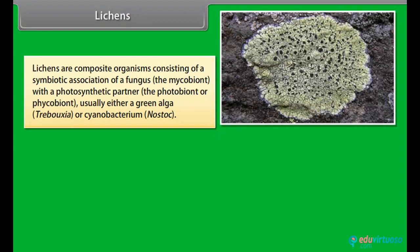Lichens are composite organisms consisting of a symbiotic association of a fungus — the mycobiont — with a photosynthetic partner, the photobiont or phycobiont. Usually either a green alga, i.e. Trebouxia, or a cyanobacterium, i.e. Nostoc.